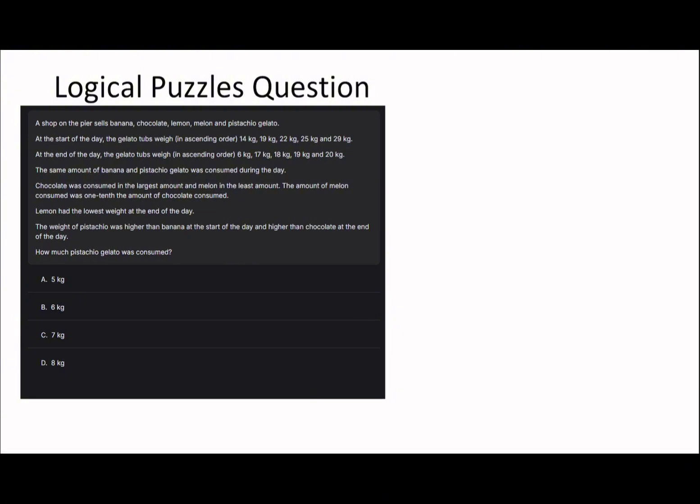This question looks quite ridiculous. I'm definitely going to put the names down the middle: banana, chocolate, lemon, melon, pistachio gelato. At the start they weigh 14, 19, 22, 25, 29 kg. At the end they weigh 6, 17, 18, 19, and 20 kg in ascending order.